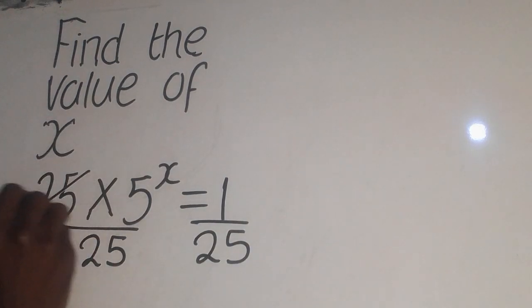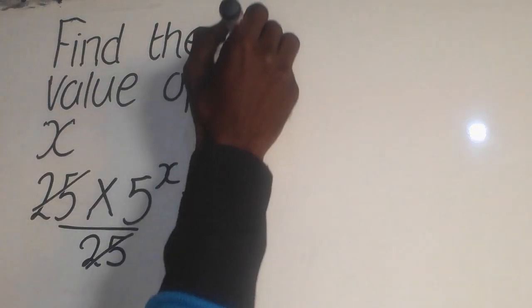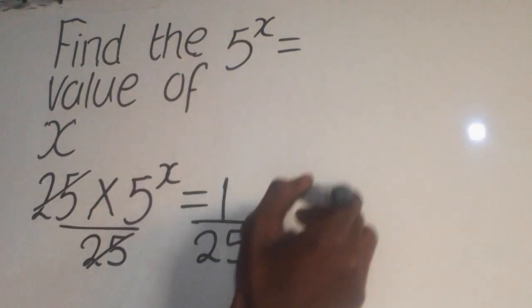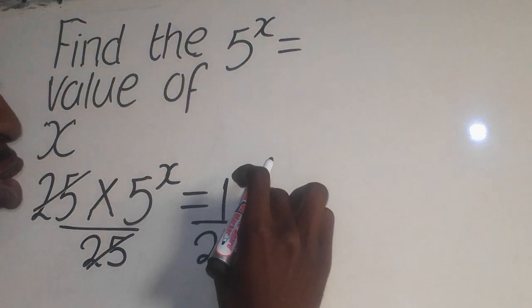So we cancel out like this. I'll remain with 5 to the power x. So here it will be 5 to the power x equal to, now this one. So when this 25 moves on top it will be 25 to the power negative 1.